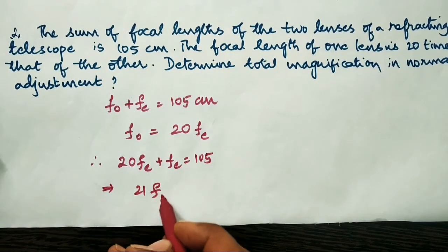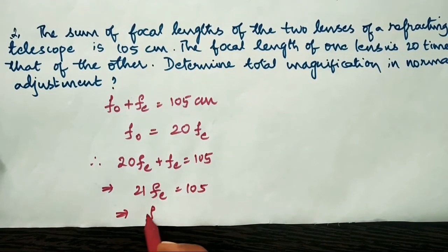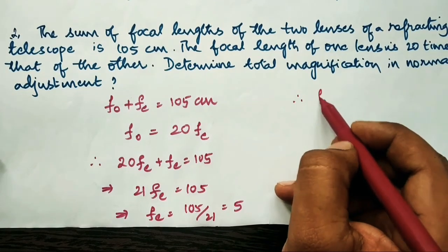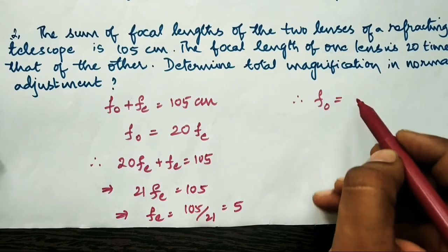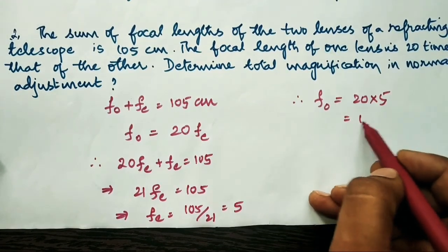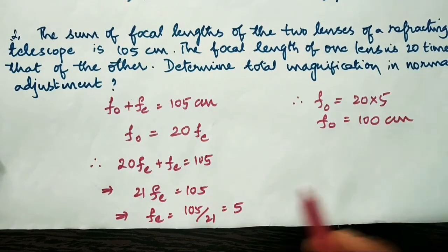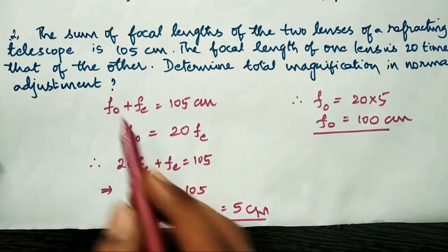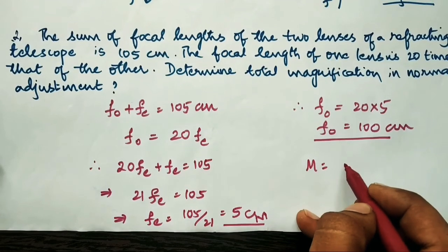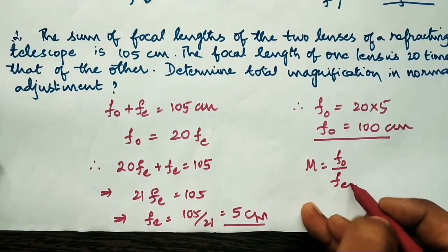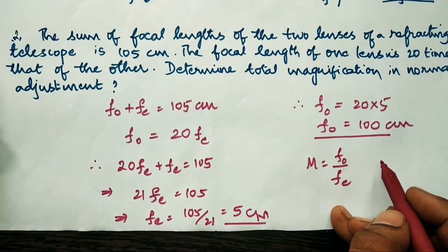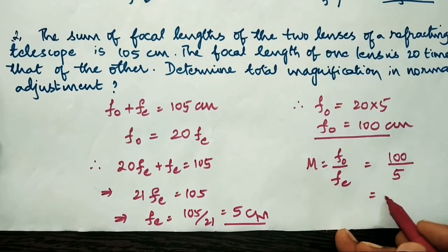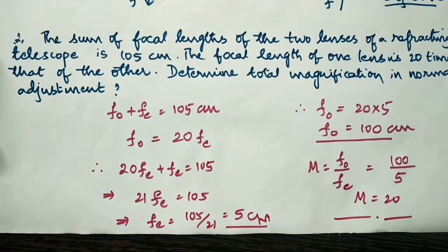From 21·fe = 105, we get fe = 5 cm. Then fo = 20 × 5 = 100 cm. Normal adjustment means the image forms at infinity, so the magnification formula is fo/fe. Dividing 100 by 5 gives a magnification of 20 times. So the magnification of this telescope is 20 times.